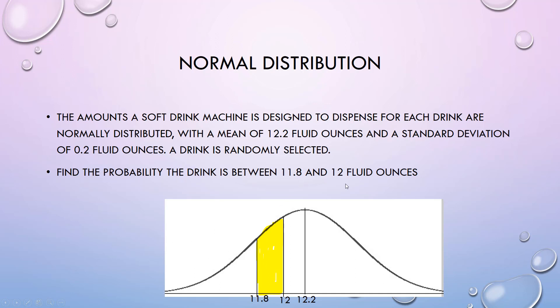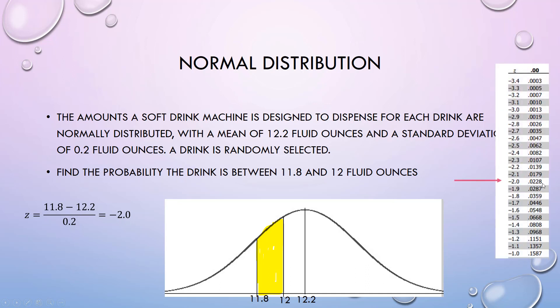If I want to find a between, remember you just do the same thing we just did, but you find the upper minus the lower. I have between 11.8 and 12 ounces. 11.8 I get 0.0228. My 12, negative 1, I get 0.1587.